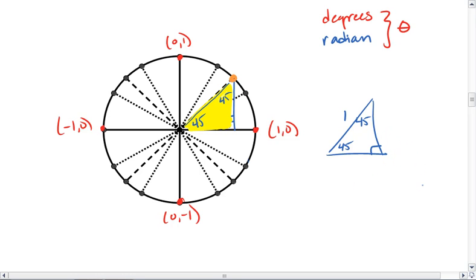Thus, our sides are root 2 over 2, root 2 over 2. So this ordered pair is telling us we are root 2 over 2 to the right and root 2 over 2 radius lengths up.